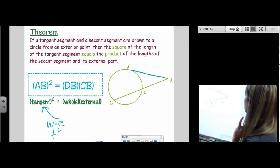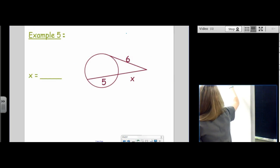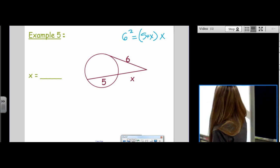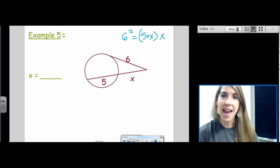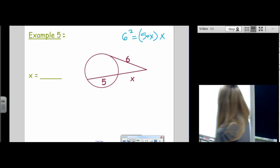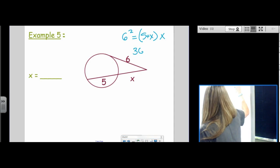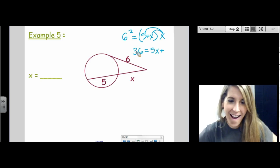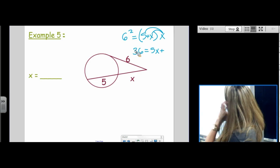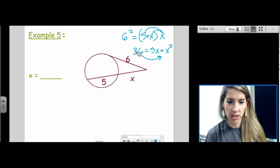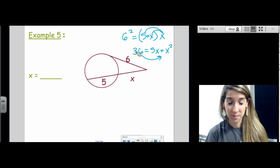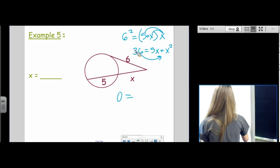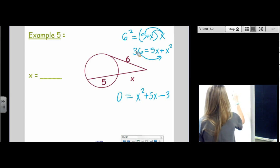Let's try an example. So, tangent squared equals whole times external. Alright, here we go. Let's solve this. Now, on this one, you don't have a choice. You have to distribute the x because it's a variable. You can't just divide both sides by x. So, this one we have no choice. 36 equals 5x plus, we're distributing it. What's x times x? Don't say 2x. x squared. I'm going to ignore that comment. Alright, now we're going to move everything to one side of the equation. Why would we move everything to one side of the equation? Yep, because it's a quadratic. It's a factoring problem. So, zero equals x squared plus 5x minus 36. It's a minus because we moved it.